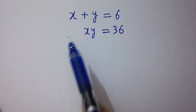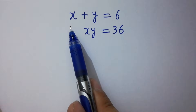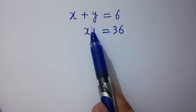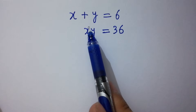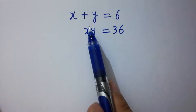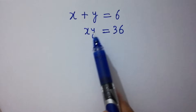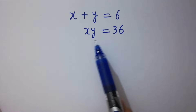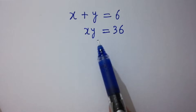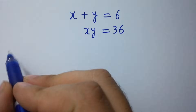Hello friends. How to solve for x and y in this problem, where x plus y equals 6 and x times y equals 36. Let's have a solution.